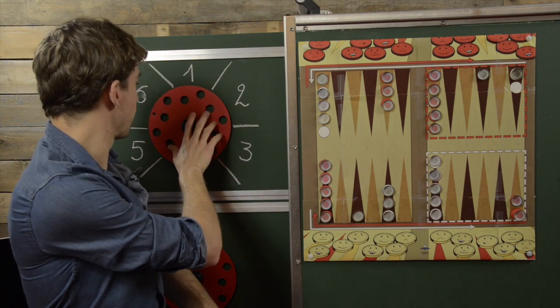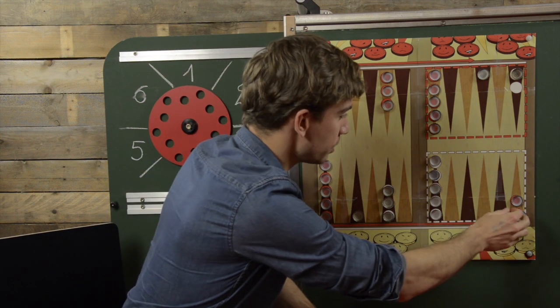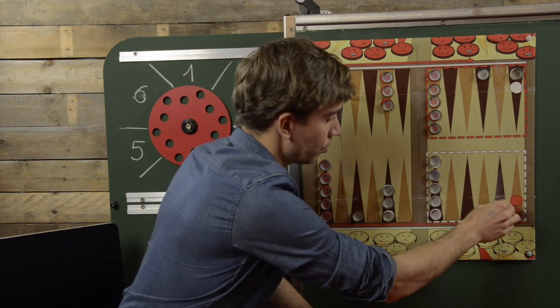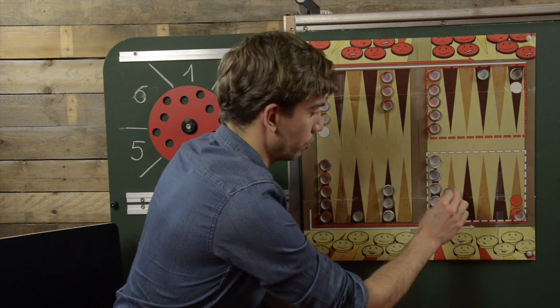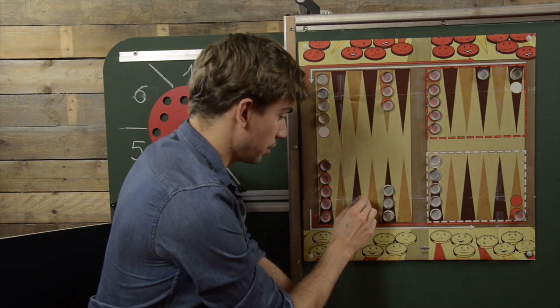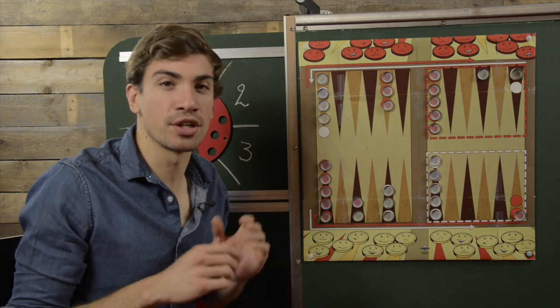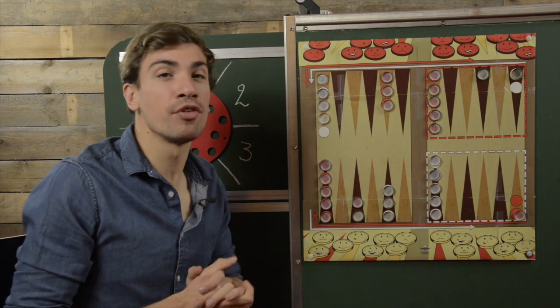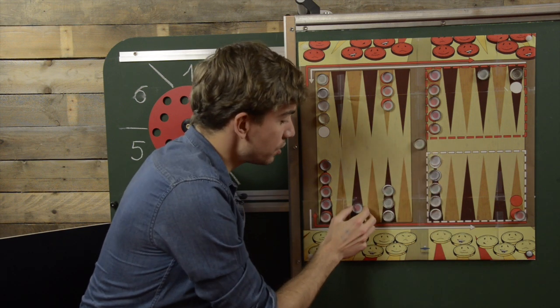I take one of my red checkers and move it nine spaces forward — six, then three. I land on a point where there is only one checker of my opponent. When this situation occurs, the white checker that was on that point moves to the bar, and that point is now occupied only by the red player's checker.